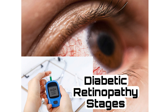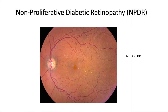Diabetic retinopathy stages. Non-proliferative diabetic retinopathy, or background diabetic retinopathy, starts off with a stage called mild NPDR. Here there are small spots on the retina called microaneurysms. They are red in color, and you also have some amount of cholesterol leaking, called hard exudates.